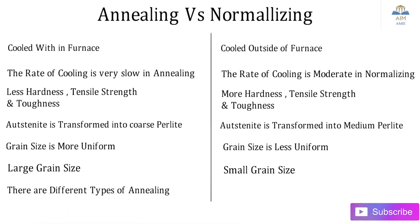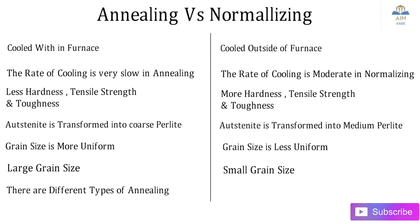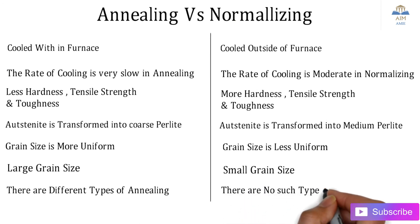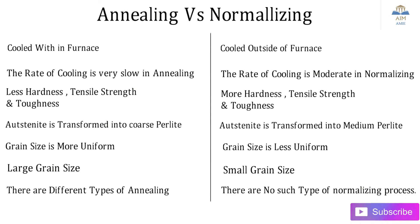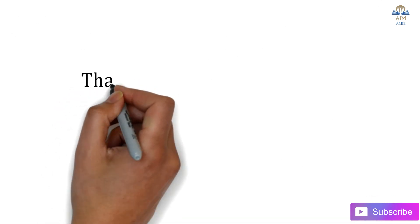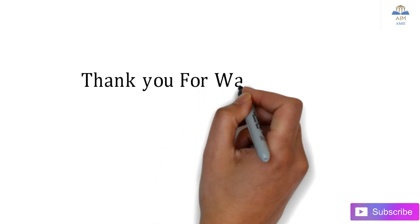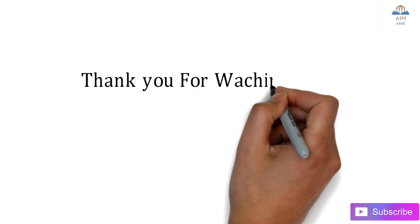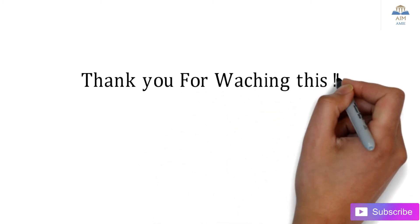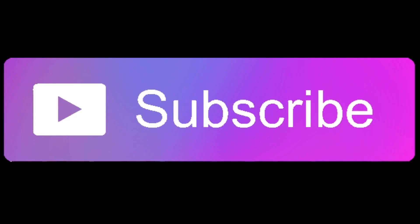In annealing there are different types, whereas in normalizing there are no such sub-categories — normalizing is a single process with no further classifications. Thank you for watching. I hope you understand the difference between annealing and normalizing.